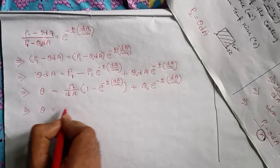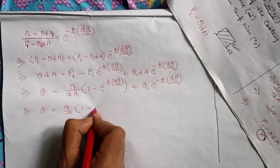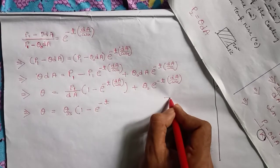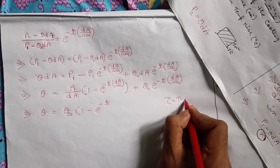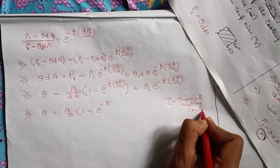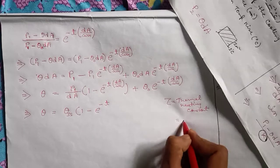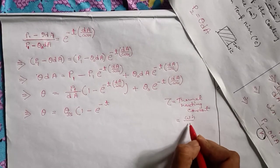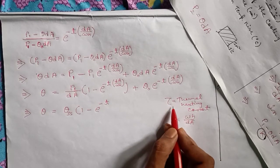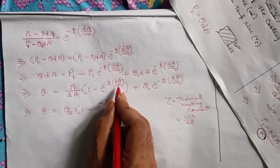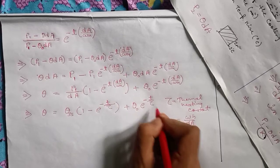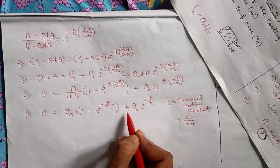Therefore we can write: θ = θ_ss·(1 − e^(−t/τ)) + θ₀·e^(−t/τ), where τ is the thermal heating constant given by τ = WH/DA. We have to remember this because in questions all these values will be given and you have to find the thermal heating constant. θ₀ is the initial temperature rise of the machine and θ_ss is the final steady state temperature rise.